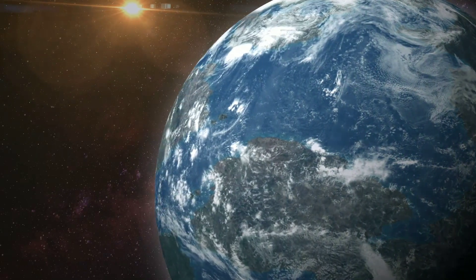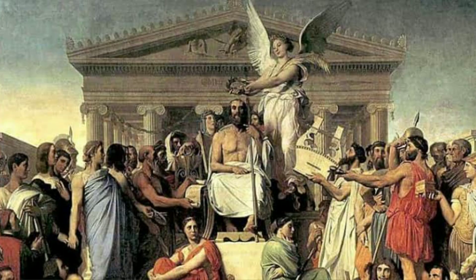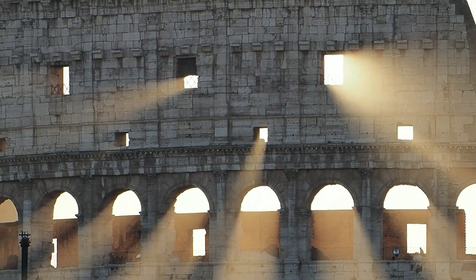All of the planets, except for Earth, were named after Greek and Roman gods and goddesses. The name Earth is an English-German name which simply means the ground.